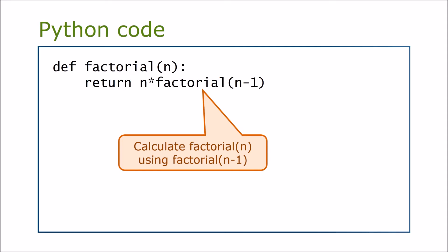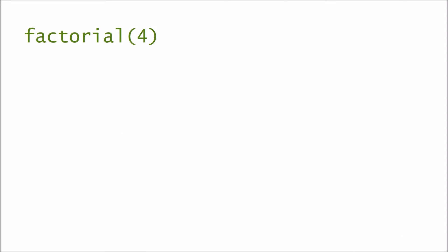So let's look at what happens when we calculate 4 factorial. We call the factorial function with a value of 4. This function then calculates 4 times the factorial of 3. The factorial function is called again to calculate the factorial of 3.